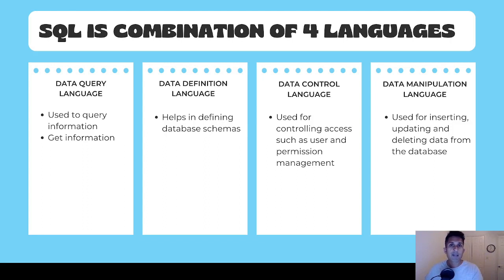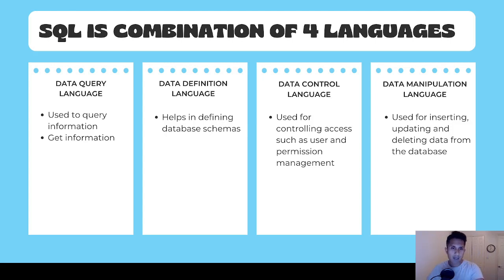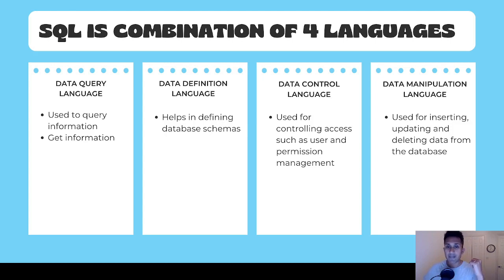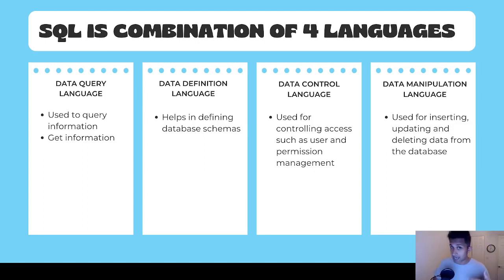The description is in the name. Data Query Language is used to query — meaning read or get — information from a database. Data Definition Language helps in defining the database schema, which is the structure of a table. For example, an employee table could have four columns: employee ID, first name, last name, and hire date — that is your schema. Data Control Language is used for controlling access such as user and permission management. Finally, Data Manipulation Language is where you're manipulating data — inserting, creating, updating, or deleting data.